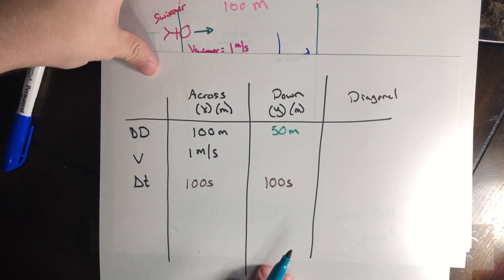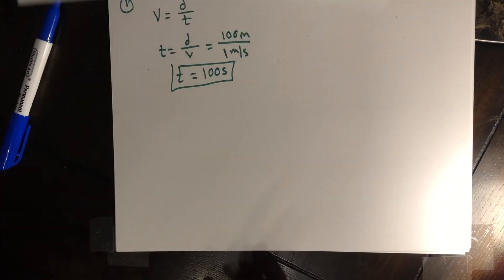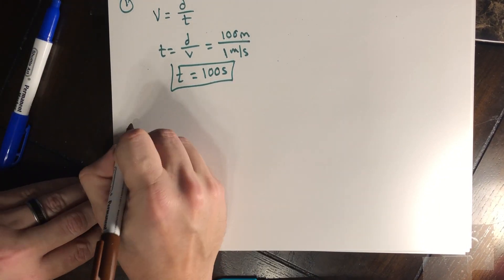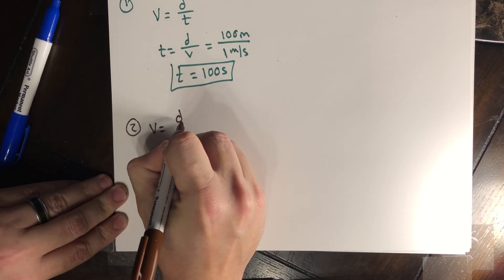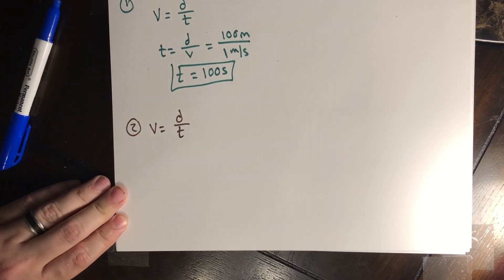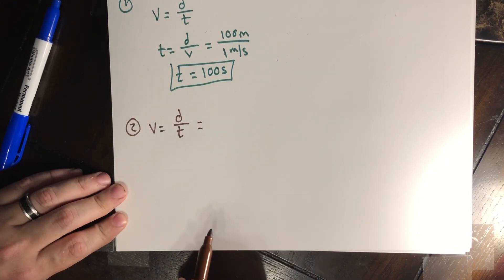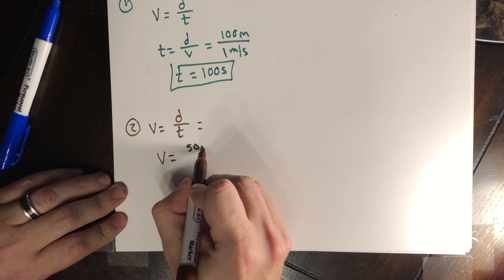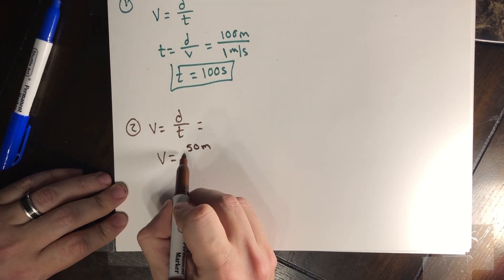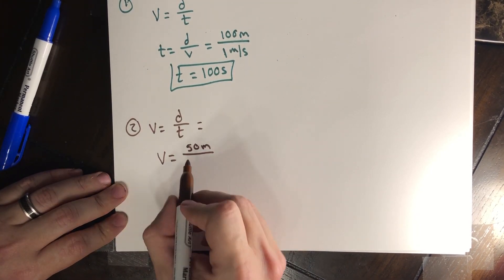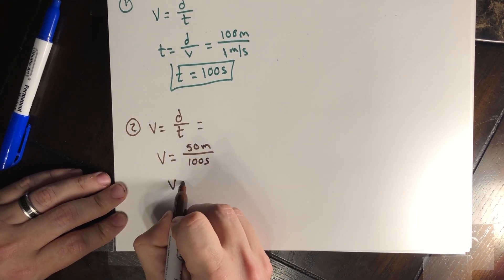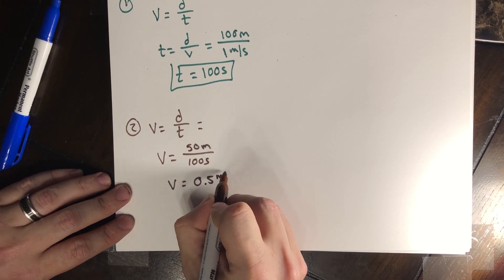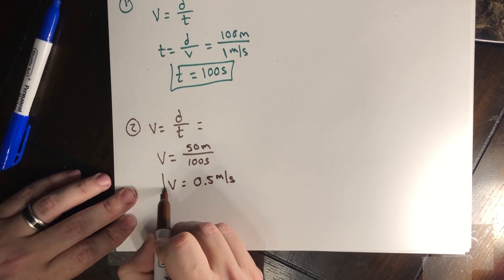We'll use the same equation: velocity equals distance over time, but this time solving for velocity in the Y direction (toward the waterfall). The displacement is 50 meters and the time is 100 seconds. So the current must be going at 0.5 meters per second or less — preferably a little bit less, since you don't want to cut it right to the edge.